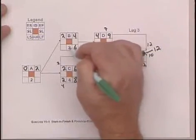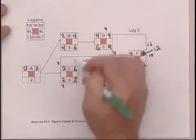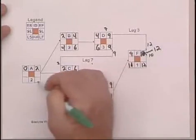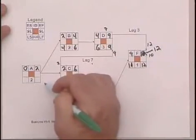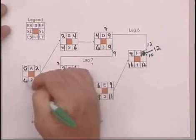Here it's simply six. Two minus six is four. We have our choice of four or two for the late finish for activity A. Choose the smaller number, two. Two minus two is zero.